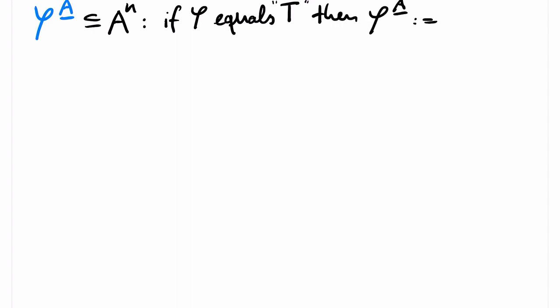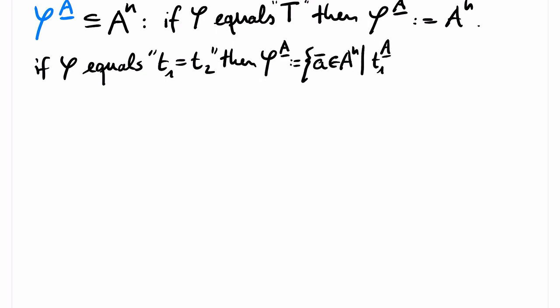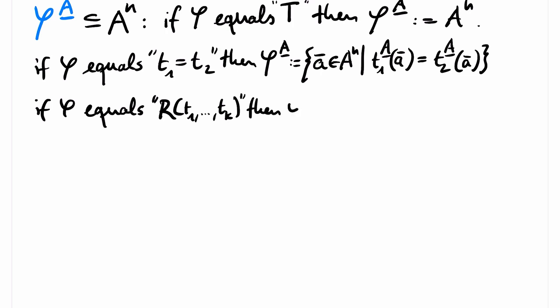If phi equals top, then phi superscript A is the set of all n-tuples of elements of A. If phi equals term t1 equals term t2, then phi superscript A contains the set of all tuples, such that if we evaluate t1 on that tuple and evaluate the term t2 on that tuple, we obtain the same value. If phi equals r of t1 up to tk, then phi superscript A contains all tuples, such that if we apply the terms t1 up to tk on that tuple, we obtain a tuple that is in the relation for r in the structure A.